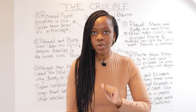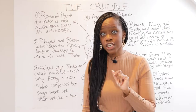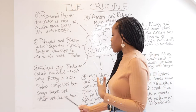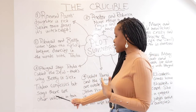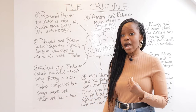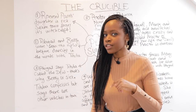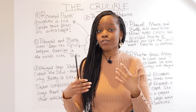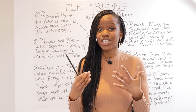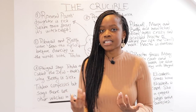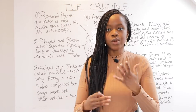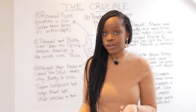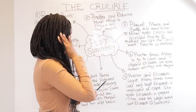When Reverend Parris threatens to whip Tituba, she confesses out of fear, saying she was there but also claims there are other witches in town — not just her. She says this to deflect attention from herself and to avoid being killed, as she is desperately trying to escape the bind that Abigail has put her in.